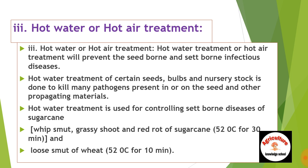Hot water treatment is used for controlling seed-borne diseases of sugarcane. For example, whip smut, grassy stunt, and red rot of sugarcane are treated at 52 degrees Celsius for 30 minutes. Loose smut of wheat is treated at 52 degrees Celsius for 10 minutes.